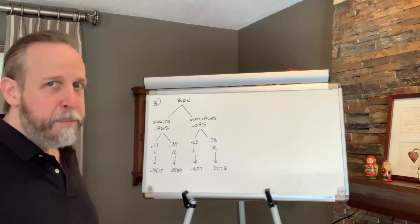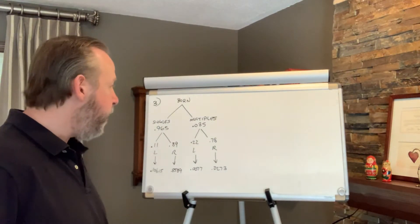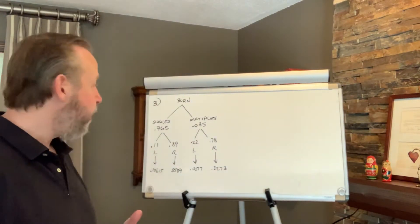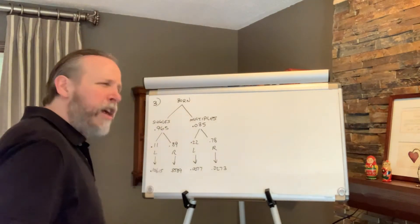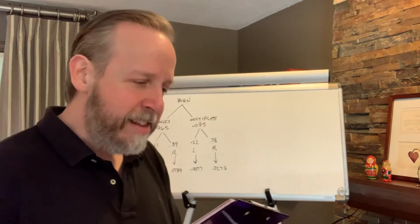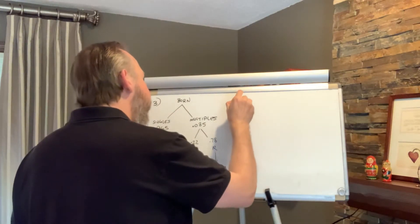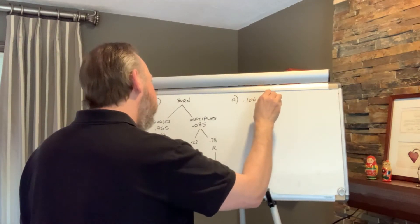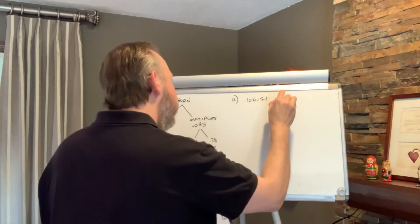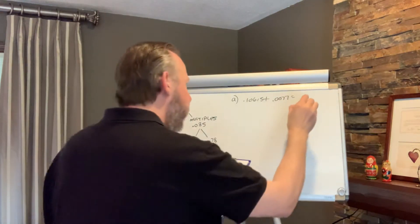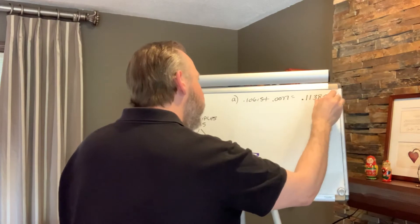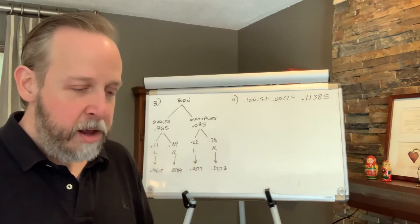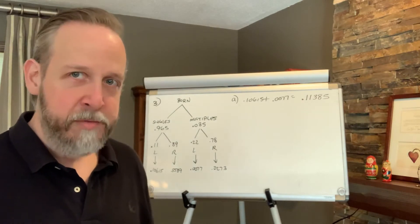This tells us that in the entire population there is a 0.0077 chance of finding a multiple birth person who is left-handed. If I choose someone at random from the population, there's an 85.89% chance that person was single born and right-handed. Part A basically asks what's the probability of finding a lefty. The lefties are 0.10615 from single borns and 0.0077 from multiples, giving an answer of 0.11385. There's an 11.385% chance of finding a person who's a lefty in the population.